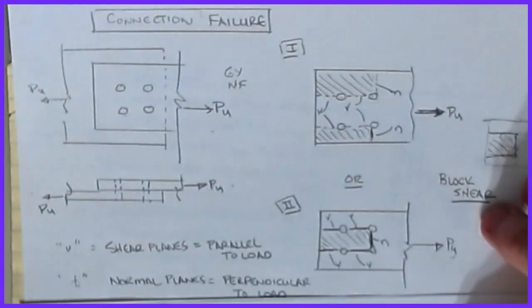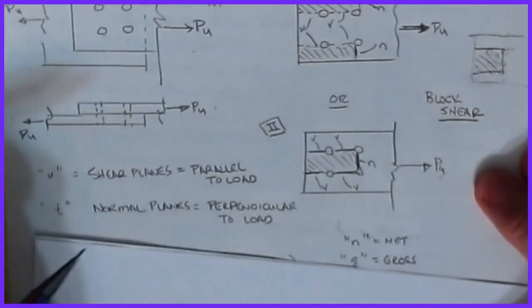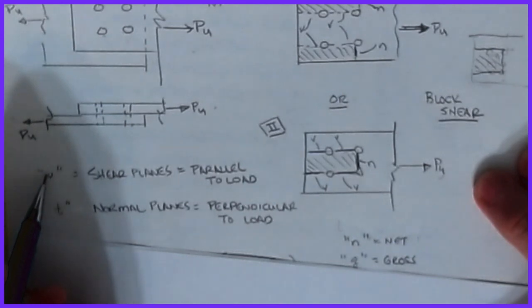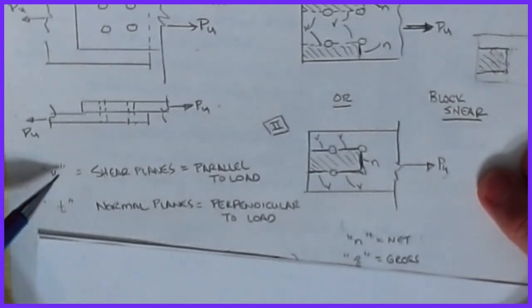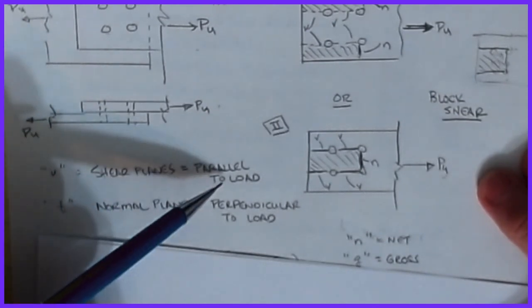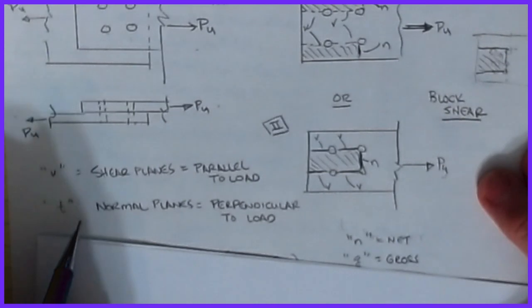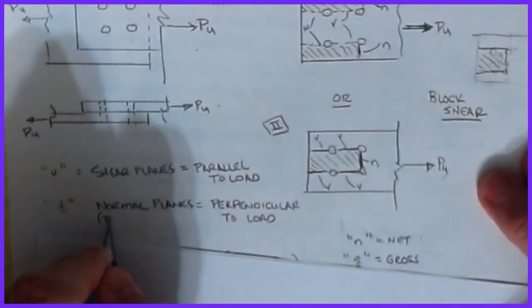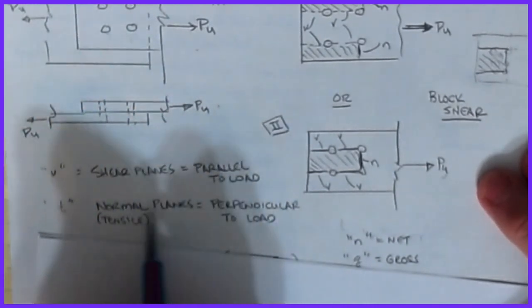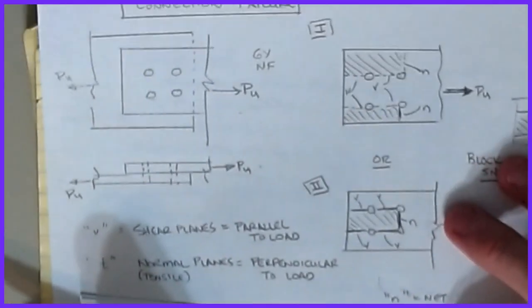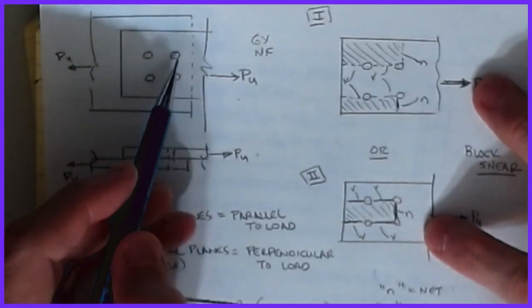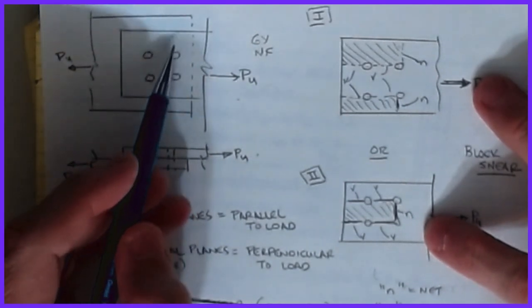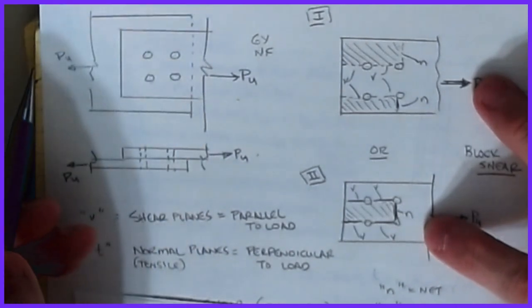There are a couple of notation items to keep your eyes open for. First, you'll see the letter V a lot, generally in a subscript. V stands for a shear plane — planes that are parallel to the load. You'll also see T's, which refer to tensile or normal planes, perpendicular to the load. So if we look at possible ways this member could fail other than gross yielding and net fracture, we could be looking at phenomena where chunks of the plate are torn out.